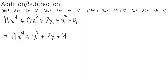Let's follow the same process for the second example. For our first term, we have 9k to the 3rd, and in our second polynomial we have a k to the 3rd that is a like term with it, so we can combine those. 9k to the 3rd minus k to the 3rd gives us 8k to the 3rd. Moving on, we have 17k squared in the first polynomial and a minus 3k squared in the second polynomial. So 17 minus negative 3 is 17 plus 3, which gives us plus 20k squared.